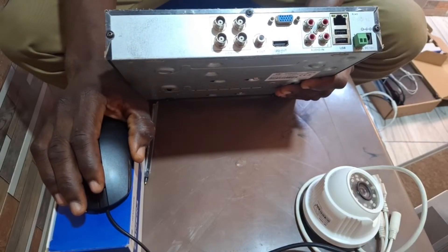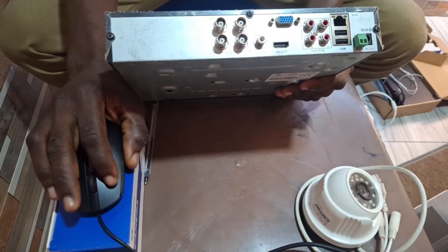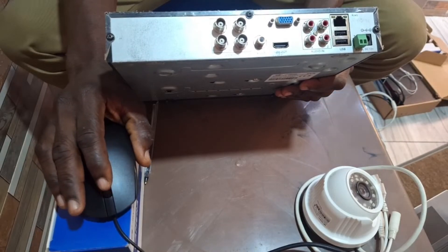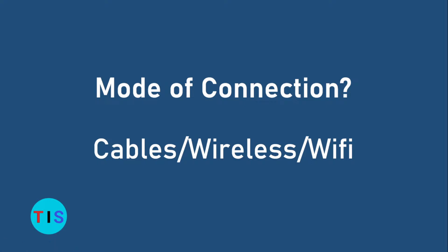The CCTV system comprises cameras, recorders, and display units. When it comes to CCTV camera installation, there are three modes of connection. The first mode is using cables. There are some that utilize wireless connection, and there are also some that use Wi-Fi connection.